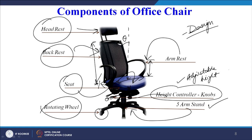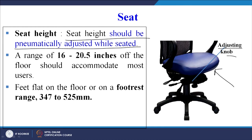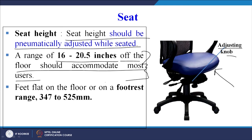Now let us understand seat design. Seat height should be pneumatically adjusted while seated. A range of 16 to 20.5 inches from the floor should accommodate most users. The feet should be flat on the floor or on a foot rest, with a range of 347 to 525 millimeters. Seat material is also very important — it can be made of leather, wire mesh, a cushion covered by cloth, and so on.